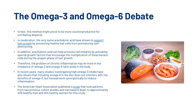In addition, arachidonic acid can help promote cell integrity by activating special growth factors that encourage the multiplication of keratin cells during the anagen phase of hair growth. Therefore, the problem of chronic inflammation may lie more in the imbalance of omega-3 and omega-6 fatty acids in the body. Many studies have shown that including omega-6 in the diet does not interfere with the benefits of omega-3, but instead works synergistically to reduce inflammation.